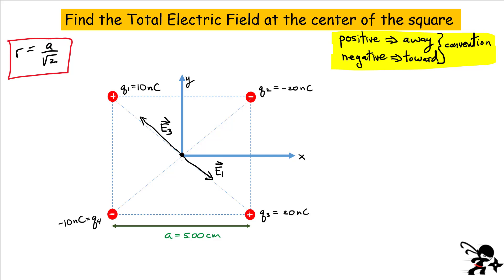Now let's look at our two negative charges. Q4 in the lower left-hand corner produces an electric field that points toward it — that is our convention — so I'll call this vector E4. Our last one is charge Q2, which is also negative, so the electric field produced by Q2 at the center is a vector that points toward it. This will be vector E2. So we have four vectors now.